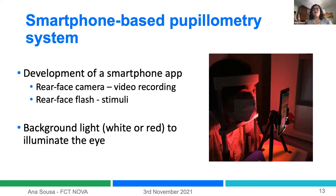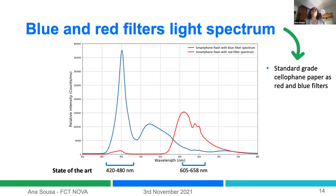This is an example of the measurement apparatus — still at an early stage. The individual is placed in a chin rest to keep stable, and we use a tripod to stabilize the smartphone. For chromatic stimuli, we use standard-grade cellophane paper as red and blue filters, which are easy to find and inexpensive. We measured the spectra of the smartphone flashlight through these filters, and it is consistent with the state of the art for chromatic pupillometry.